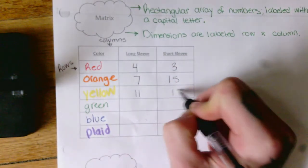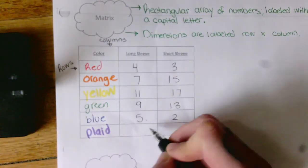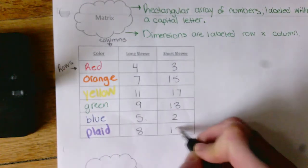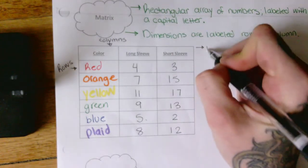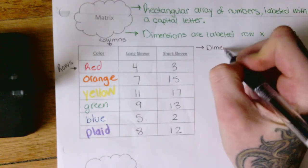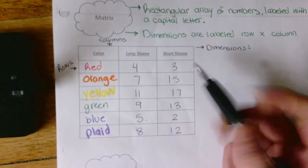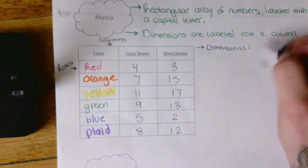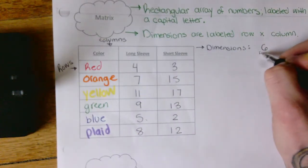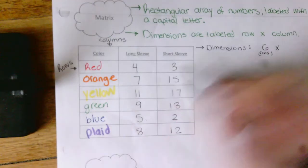Okay, so let's say we've got four red long sleeve and three short sleeves, seven orange long sleeve, fifteen, and let's just fill in these quantities for each. Okay, so we would say these dimensions for this matrix. There are one, two, three, four, five, six rows by one, two columns.